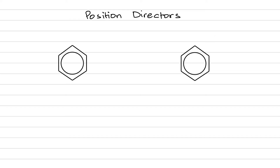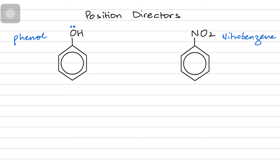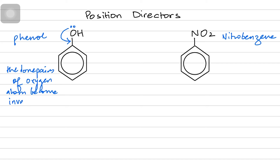Now moving on, let's talk about position directors and see how one substituent affects the position of the other one. Consider phenol on the left-hand side, which is basically OH attached to benzene, and nitrobenzene on the right-hand side where the nitro group is present. The oxygen atom has lone pairs which are involved in the delocalized system, and the lone pairs of the oxygen atom become involved in the pi bond resonance system. This makes the benzene ring more reactive, but it also has an effect on the position.